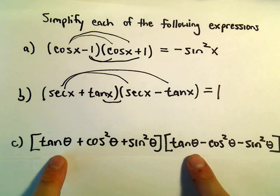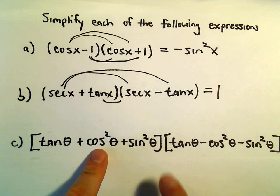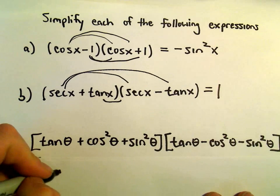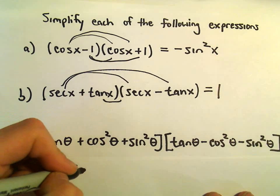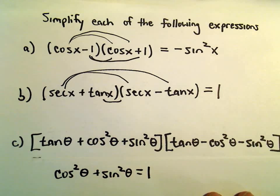Of course, you could start multiplying this all out, but don't do that. Anytime you see cosine squareds and sine squareds, I always think, is there any way to bring this identity into it? So cosine squared theta plus sine squared theta equals 1.